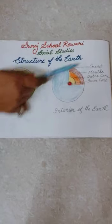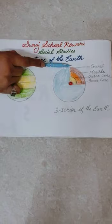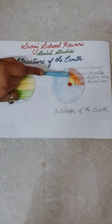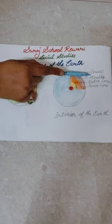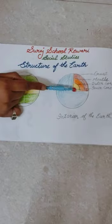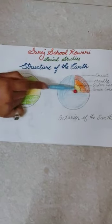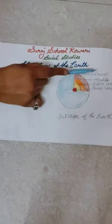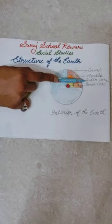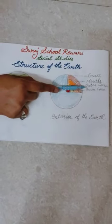The first layer is the crust. We all are living on the crust. When you play in the playground, you are on the crust layer of the earth. After the crust, we have the mantle — mantle is the second layer. The center of the earth is the core, and we divide the core into two parts: inner core and outer core.